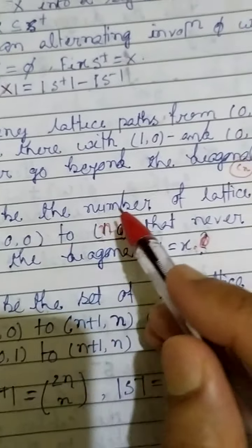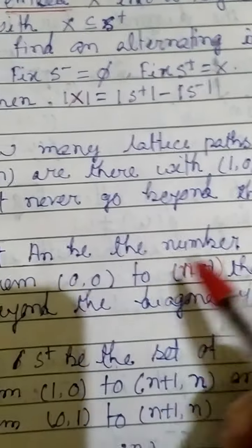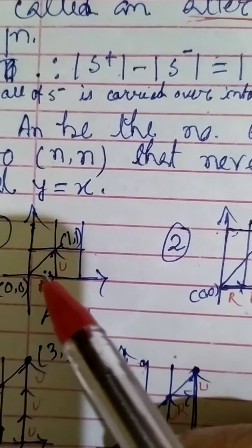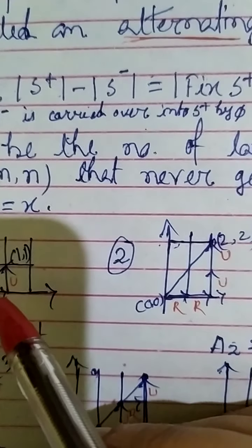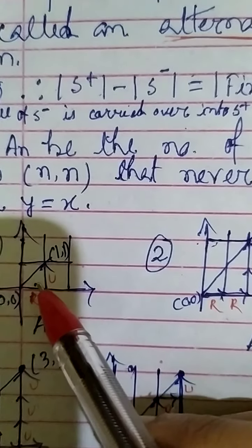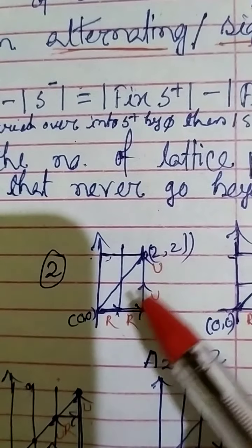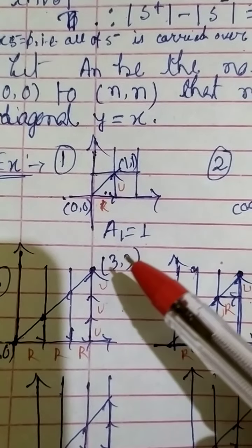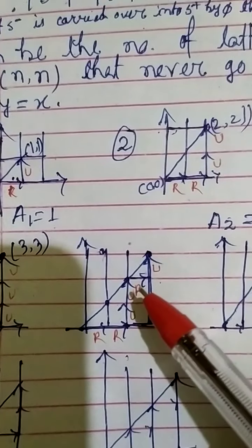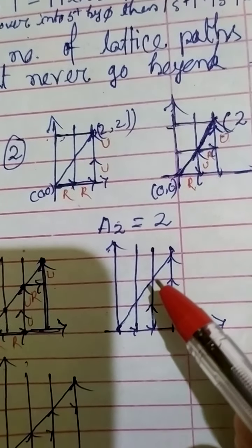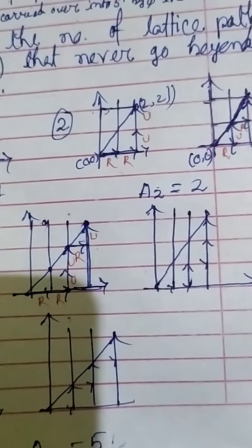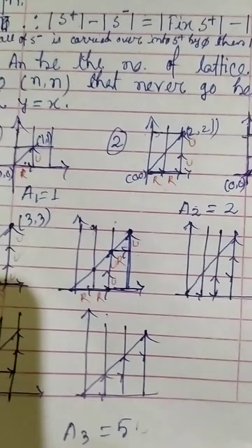For A₁, from (0,0) to (1,1), there is only one path: right then up. For A₂, from (0,0) to (2,2), there are two paths. For A₃, from (0,0) to (3,3), there are five paths. These are the Catalan numbers, which we already gave as an example in class.